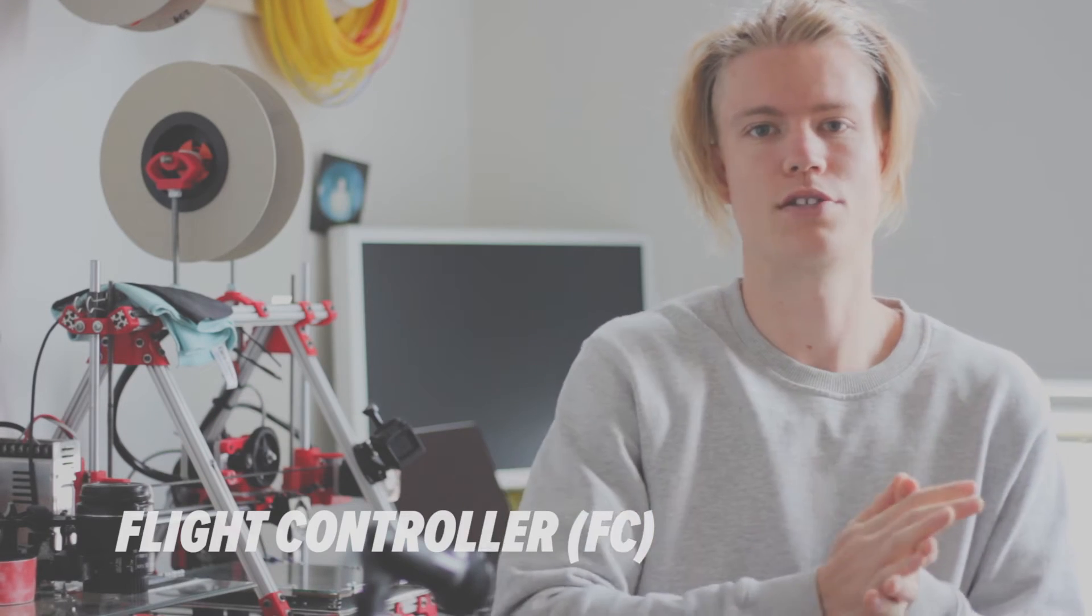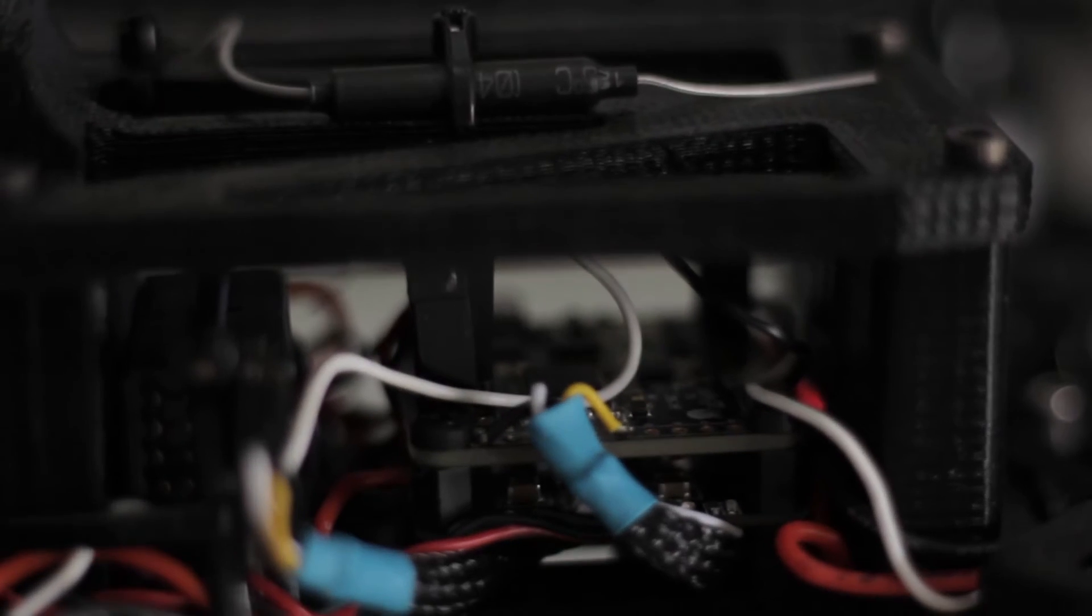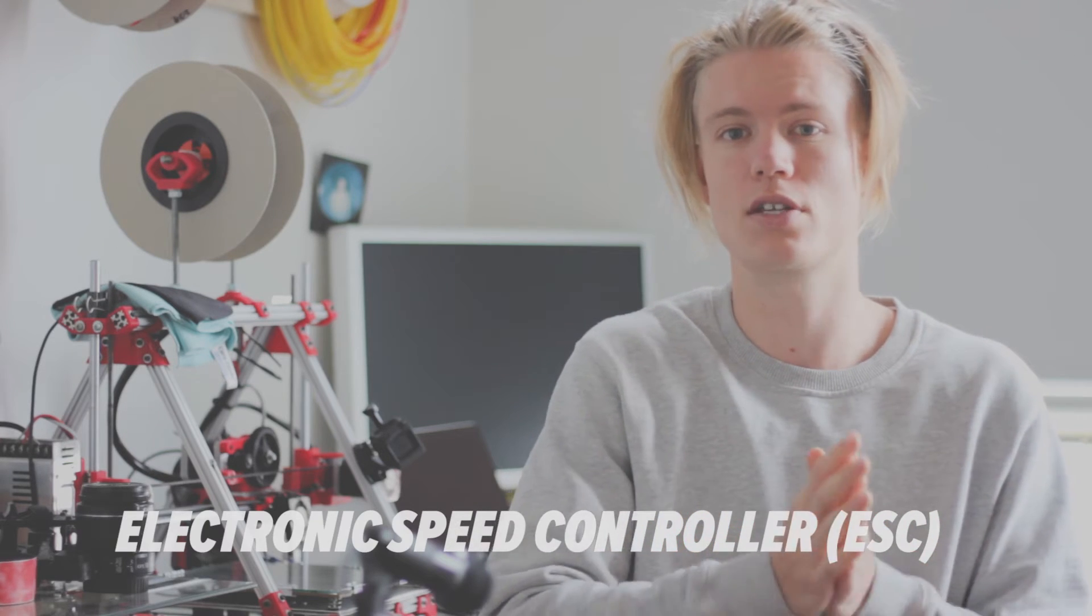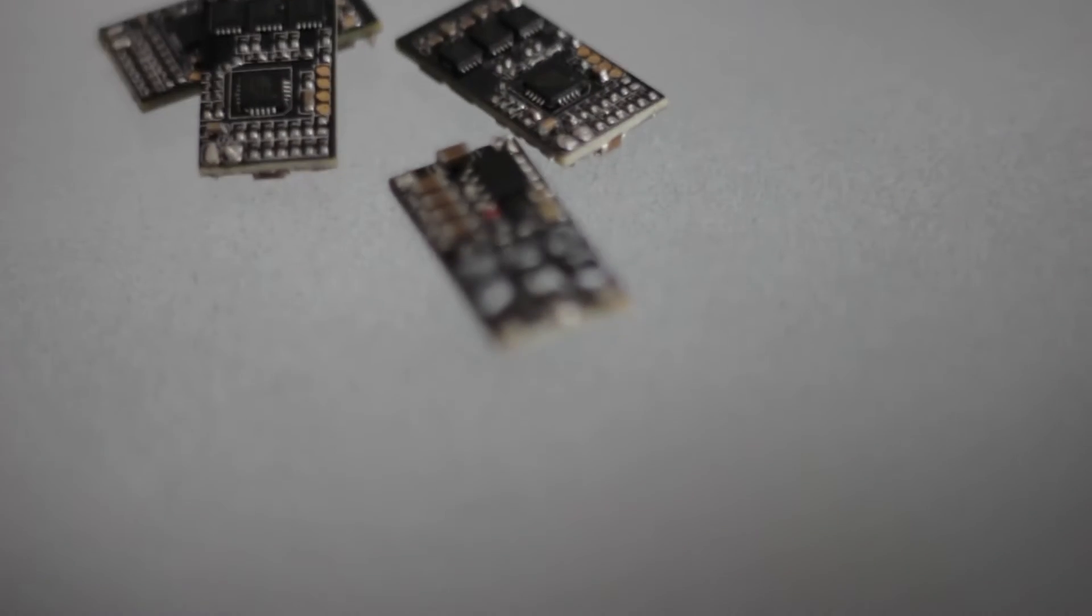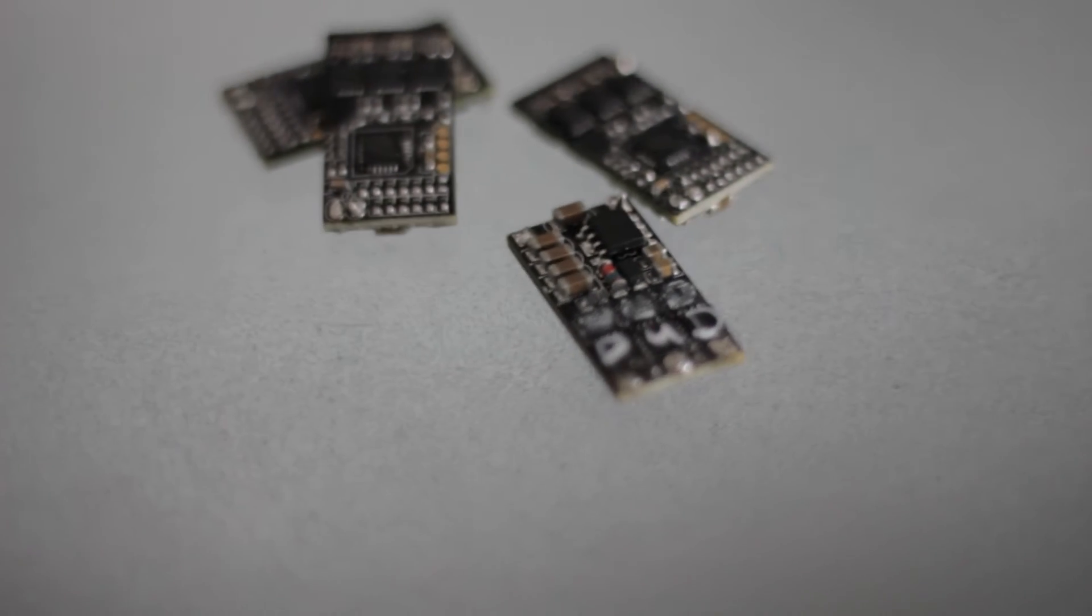You're going to need a flight controller - this is the brain of the drone, it interprets the signal from your radio transmitter and decides what to do with it. You need four electronic speed controllers or ESCs, there's one for each motor and it determines which way the motor spins and how quickly.